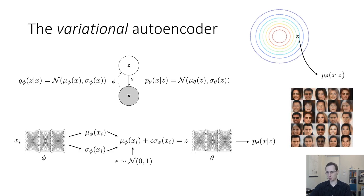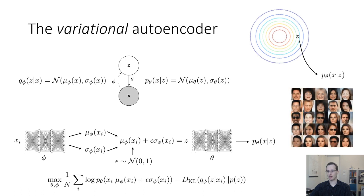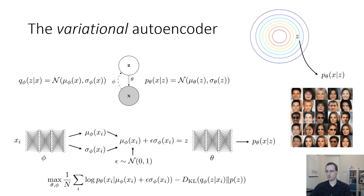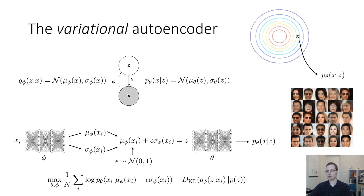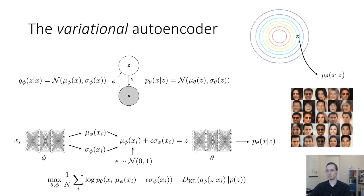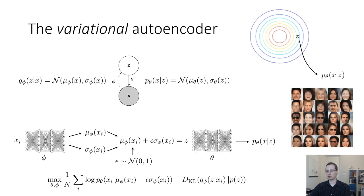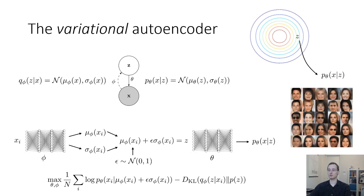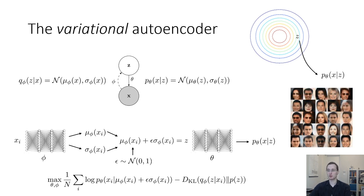Here's the architecture and the objective. The first part of the objective looks like an autoencoder objective: log p_theta of x_i given mu_phi(x_i) plus epsilon times sigma_phi(x_i). You encode x_i into mu and sigma, get z by doing mu plus epsilon times sigma, then decode to get the resulting distribution over x, and maximize the probability of the real image under this distribution. So this first part is an autoencoder objective.